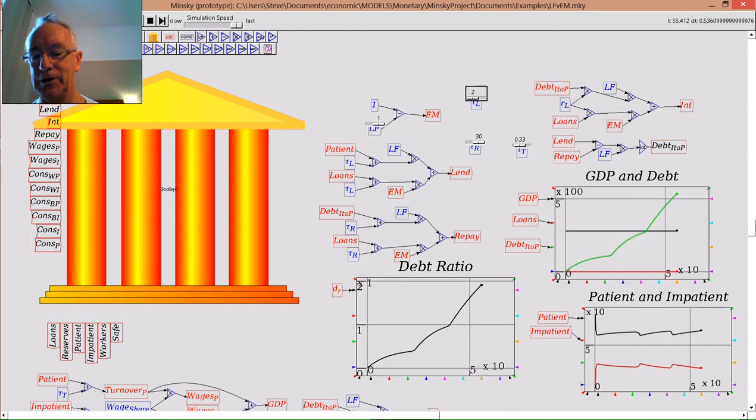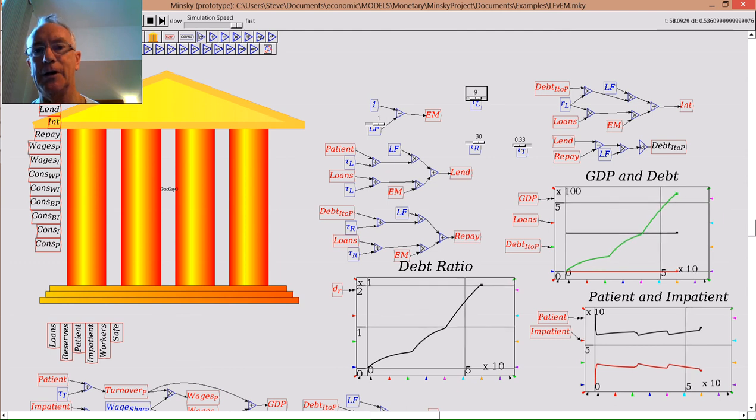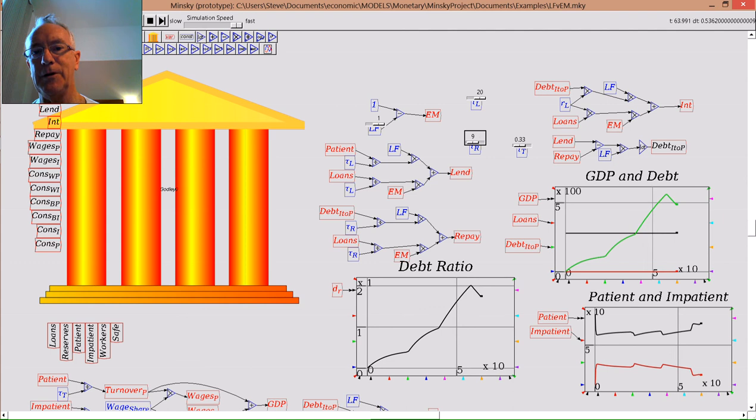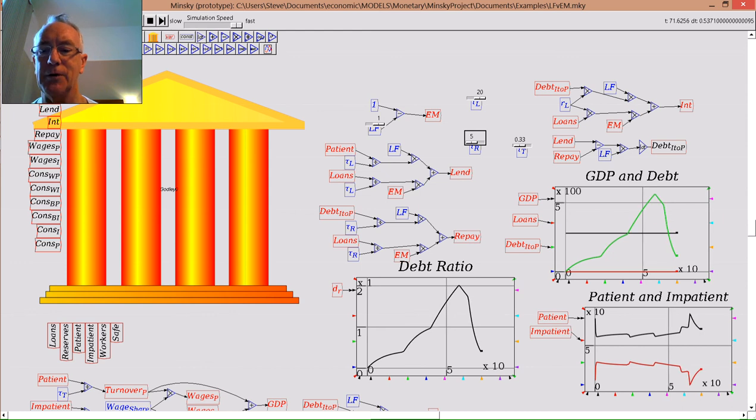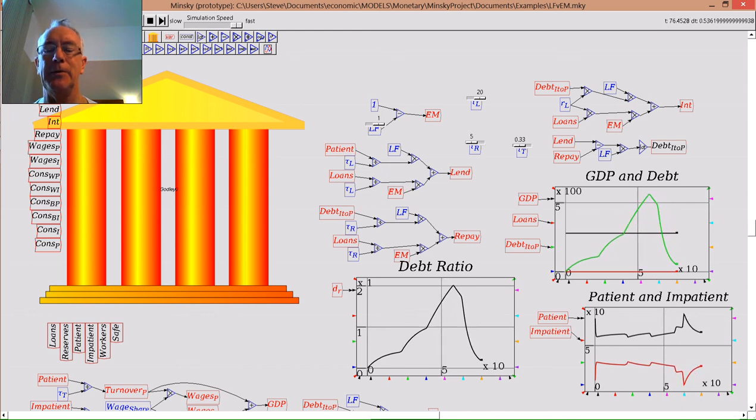So then we go to the stage where there's suddenly much less willingness to lend by the patient agent and much more desire to repay debt by the impatient agent, and bugger all happens to the economy. The debt level falls, the debt ratio falls, the amount of money in the accounts changes radically, but there's no impact upon GDP whatsoever.